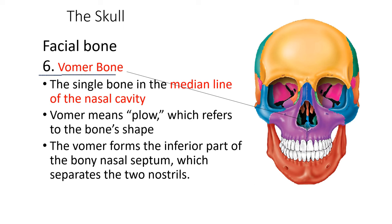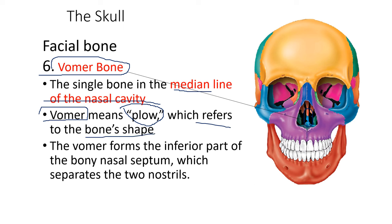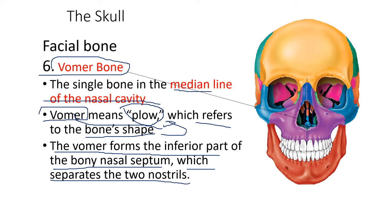Another part of the facial bone is the vomer bone — a single bone in the midline of the nasal cavity. The word 'vomer' means plow, referring to the bone's shape. The vomer forms the inferior part of the bony nasal septum, which separates the two nostrils — that is why we have left and right nostrils.